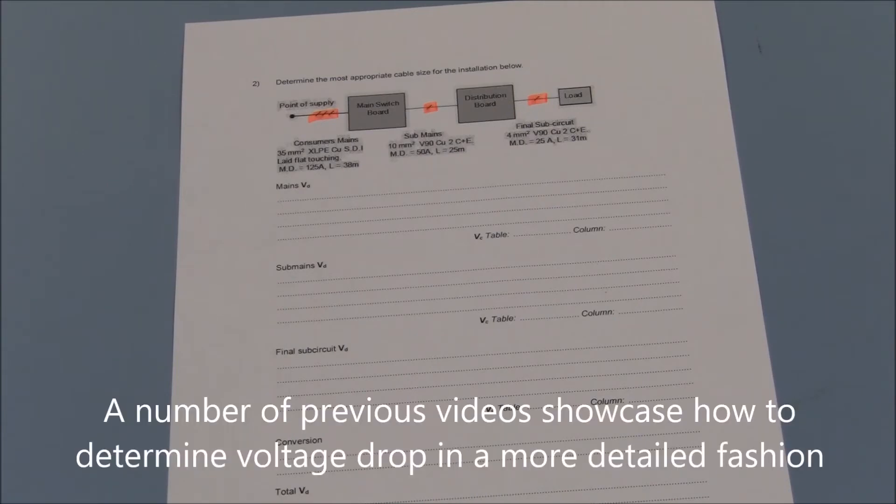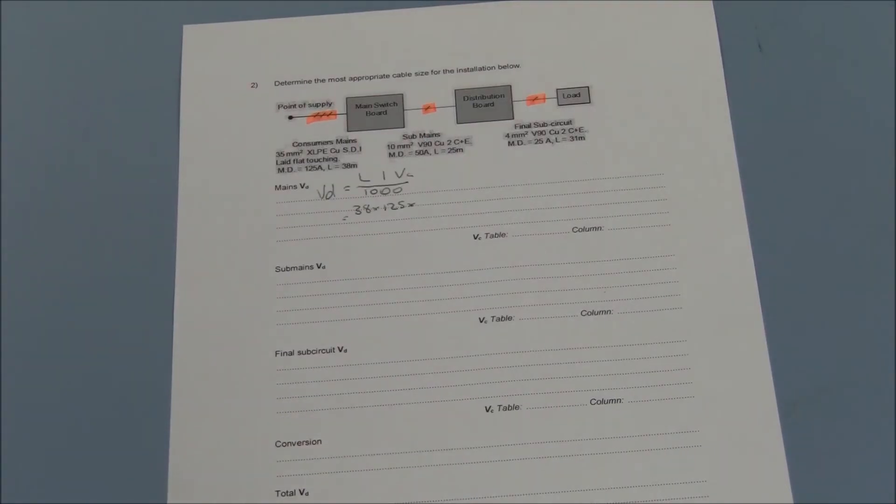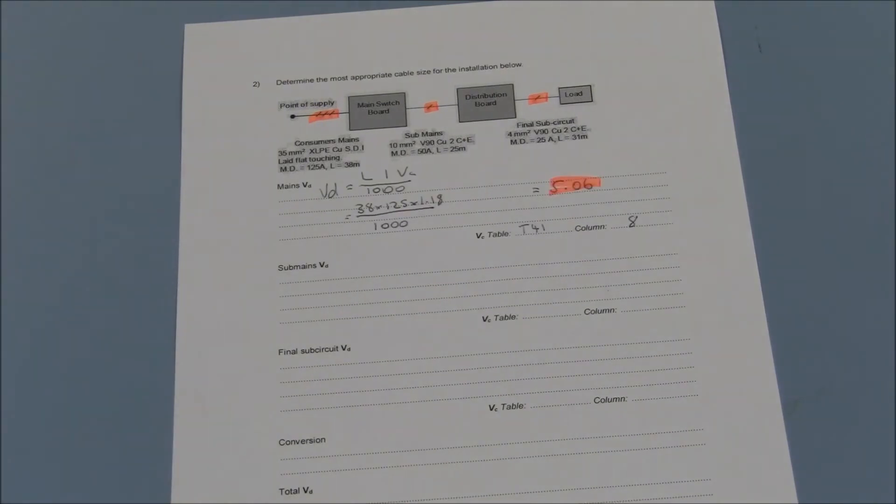Previous videos have detailed determining voltage drop of known cables, so we will move swiftly through the voltage drop of the consumers mains, landing on 5.06 volts courtesy of table 41 column 8.